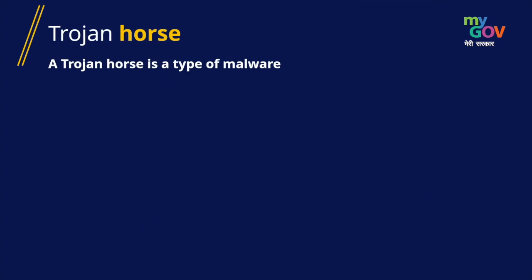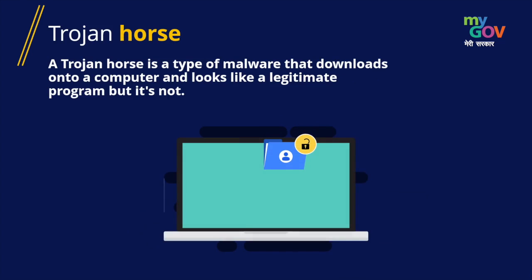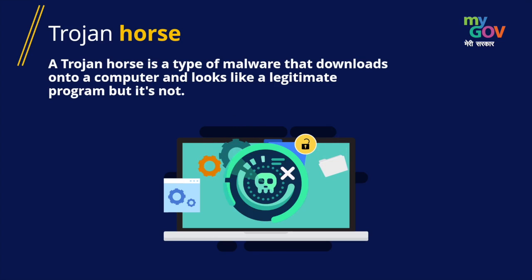A trojan horse is a type of malware that downloads onto a computer and looks like a legitimate program, but it's not. It usually comes in the form of an application or software pretending to either be useful or fun, but steals important information.